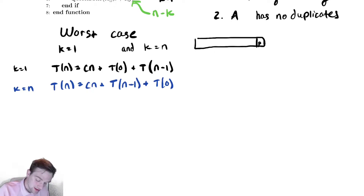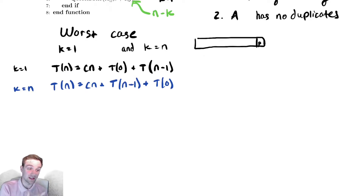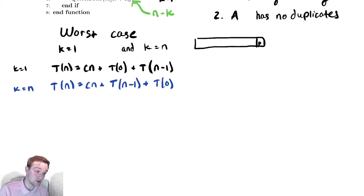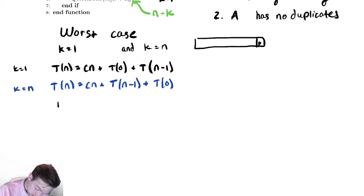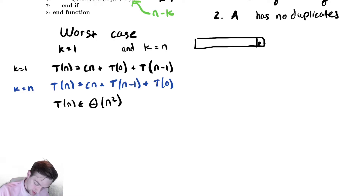I leave this to you as an exercise — we've seen this exact recurrence relation before. If you do your substitutions it becomes an arithmetic summation, and you can show T(n) is in Θ(n²).